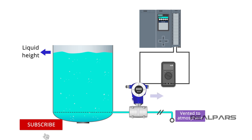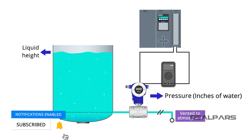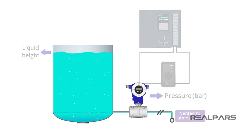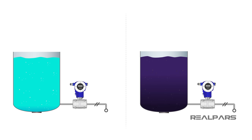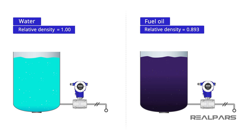We talked about converting the resulting inches of water pressure value into any pressure scale you need, such as psi, kilopascal, or bar. That works just fine if the liquid in the vessel is water. What if the liquid stored in the vessel is not water and doesn't have a relative density of 1?